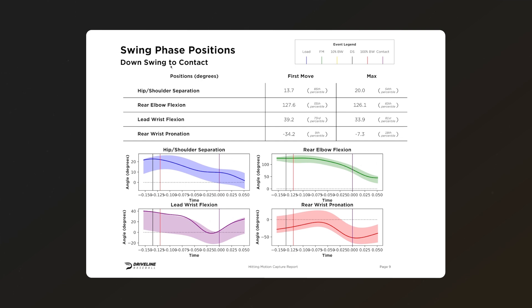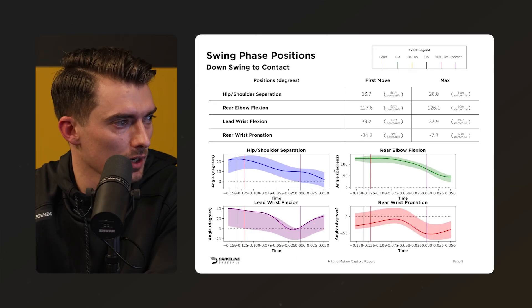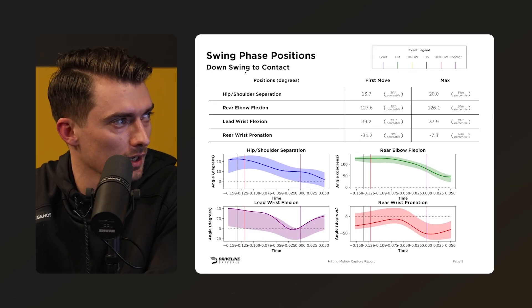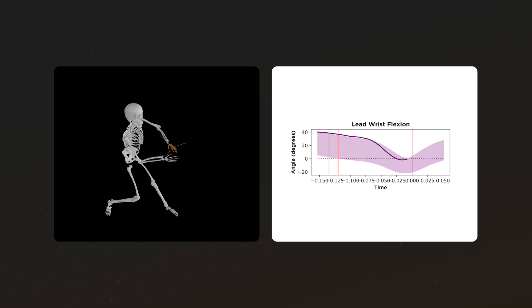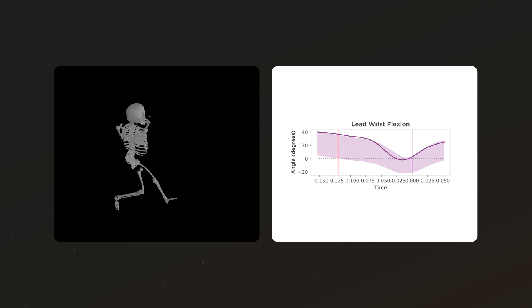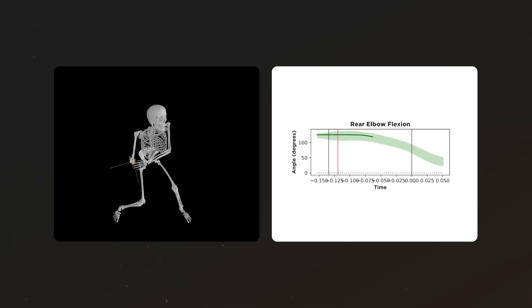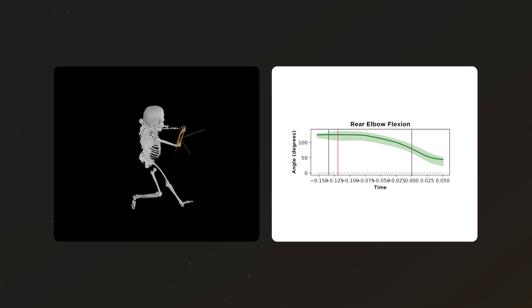More swing phase positions, downswing to contact, getting more granular with wrist flexion, rear elbow flexion, and wrist pronation. This window is critical because it's when you're transferring energy up the chain and determining how the barrel works through space into contact. Higher wrist flexion means the wrist is flexed upward; that flexion decreases as you release the barrel. Rear elbow flexion is again like a bicep curl — more at the top. Rear wrist pronation is the barrel turning down toward the catcher as you prepare to release and extend through contact.